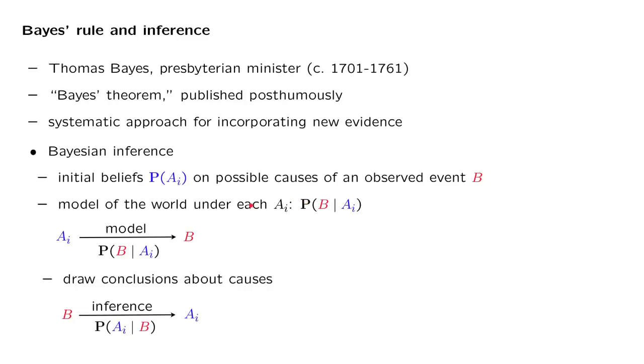The general idea is that we start with a probabilistic model which involves a number of possible scenarios. And we have some initial beliefs on the likelihood of each possible scenario. There is also some particular event that may occur under each scenario, and we know how likely it is to occur under each scenario. This is our model of the situation.